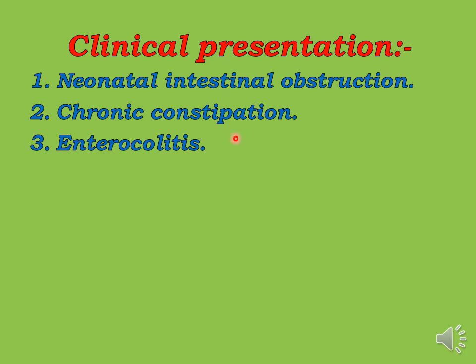The cause of Hirschsprung disease-associated enterocolitis is stasis of fecal material in the colon, leading to bacterial overgrowth and invasion of bacteria into the wall of the colon — most commonly Clostridium difficile, or sometimes viruses such as rotavirus. This causes enterocolitis, which can be a life-threatening condition, potentially causing toxic megacolon or fatal perforation of the colon.